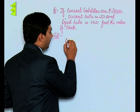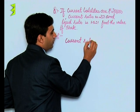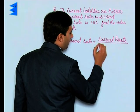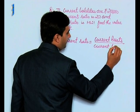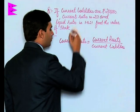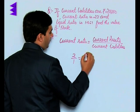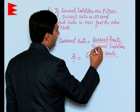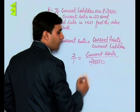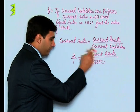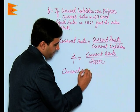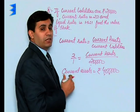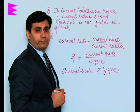The formula for current ratio is: current ratio is equal to current assets upon current liabilities. In this question, we are given a current ratio of 2 is to 1. This is equal to current assets upon current liabilities, which are given to be rupees 2 lakhs. By cross multiplying, 2 into 2 lakh, we get current assets as rupees 4 lakh. That means this business has got current assets worth rupees 4 lakhs.